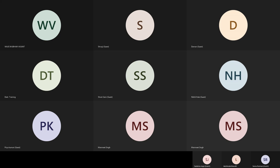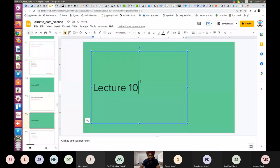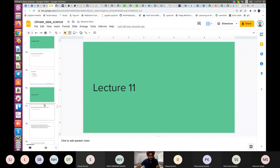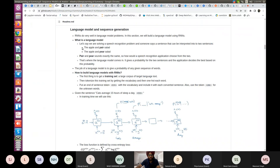This is lecture number 11 of Climate Data Science. Today we will finish the deep learning specialization. The class runs from two to three, after which we'll do a data analysis session. We were talking about sequence models in the last class.